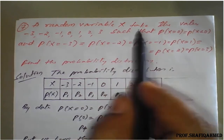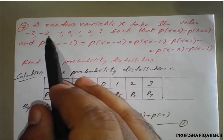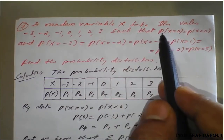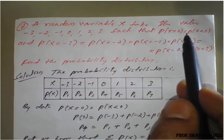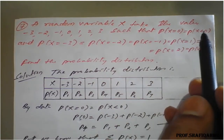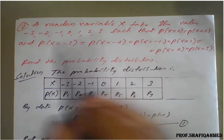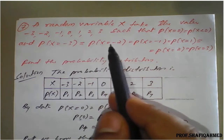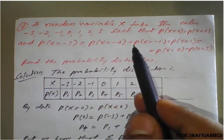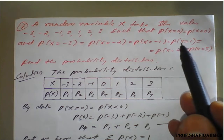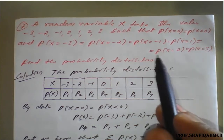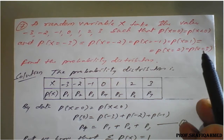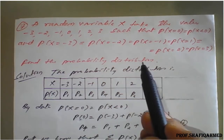A random variable X takes the values minus 3, minus 2, minus 1, 0, 1, 2, 3, such that P of X equals 0, which equals P of X less than 0, and P of X equals minus 3, which equals P of X equals minus 2, which equals P of X equals minus 1, which equals P of X equals 1, which equals P of X equals 2, which equals P of X equals 3. Find the probability distribution.